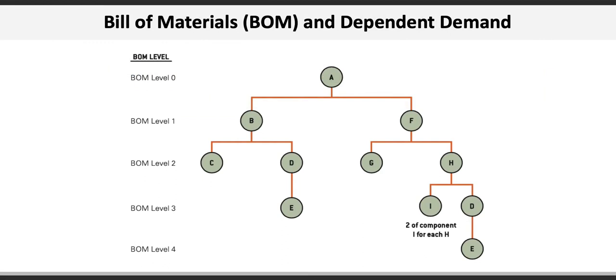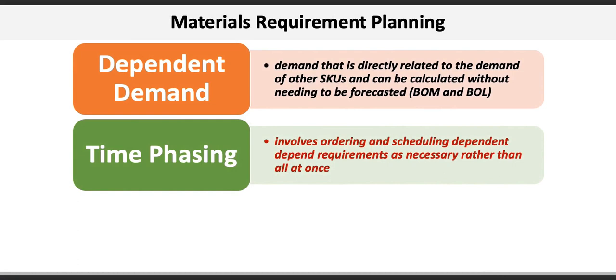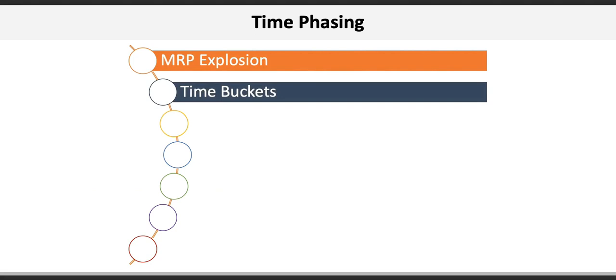Time phasing involves ordering and scheduling dependent demand requirements as necessary rather than all at once. Time phasing can include the following supporting documents and forecasts: MRP explosion, time buckets, gross requirements, scheduled or planned receipts, planned order receipts, planned order release, and projected inventory on hand.